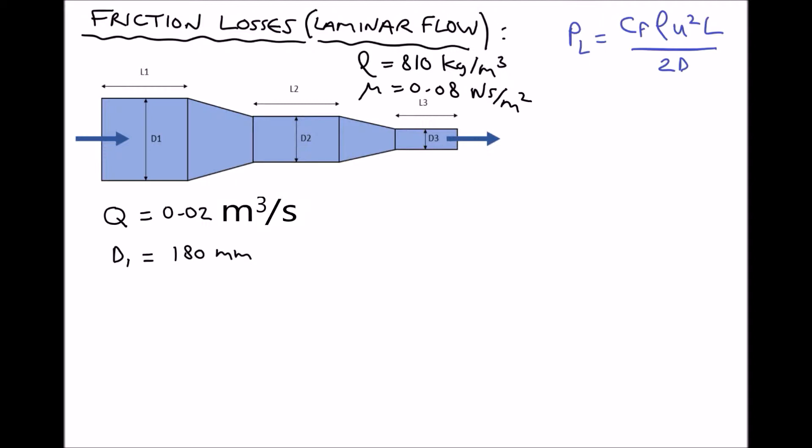There's only one equation that we need to calculate pressure losses due to friction and it's displayed in the top right hand corner. Pressure loss equals Cf — C subscript f is something called a friction factor. Rho is the density, U squared is the fluid velocity squared, L is the length of pipe divided by 2 times the diameter. So there's quite a lot of factors that affect the amount of pressure that's going to be lost as a result of friction.